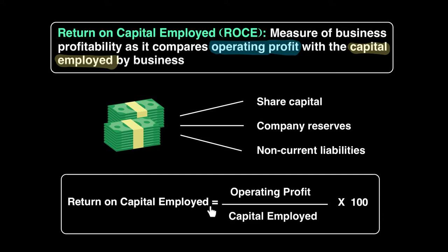In order to calculate this, there's a simple formula: Return on Capital Employed equals operating profit divided by total capital employed, multiplied by 100. Since it's multiplied by 100, the result will be a percentage. That makes it easy to compare — for example, you can compare it to the prevailing interest rate in the country and see which gives a higher return, or compare your percentage to a competitor's to see who's getting a better return on capital employed.